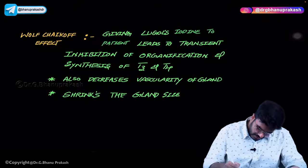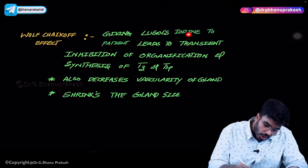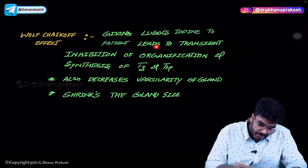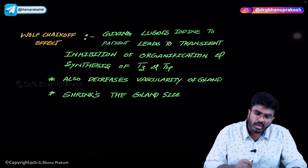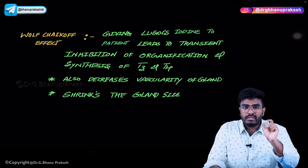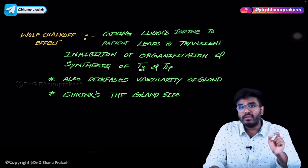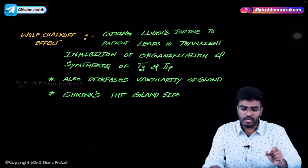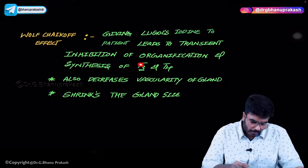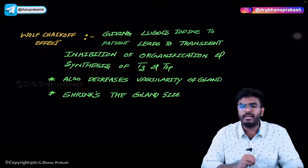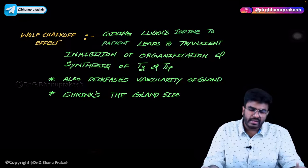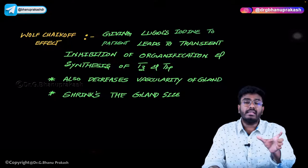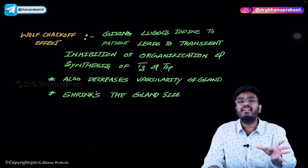Giving Lugol's iodine leads to transient inhibition of the organification process. If you give excessive Lugol's iodine, the organification process — a very important step in thyroid hormone production — is inhibited, and automatically T3 and T4 synthesis is also inhibited. This is a transient effect. The Wolff-Chaikoff effect is the decrease in T3/T4 hormone production due to excessive iodine.